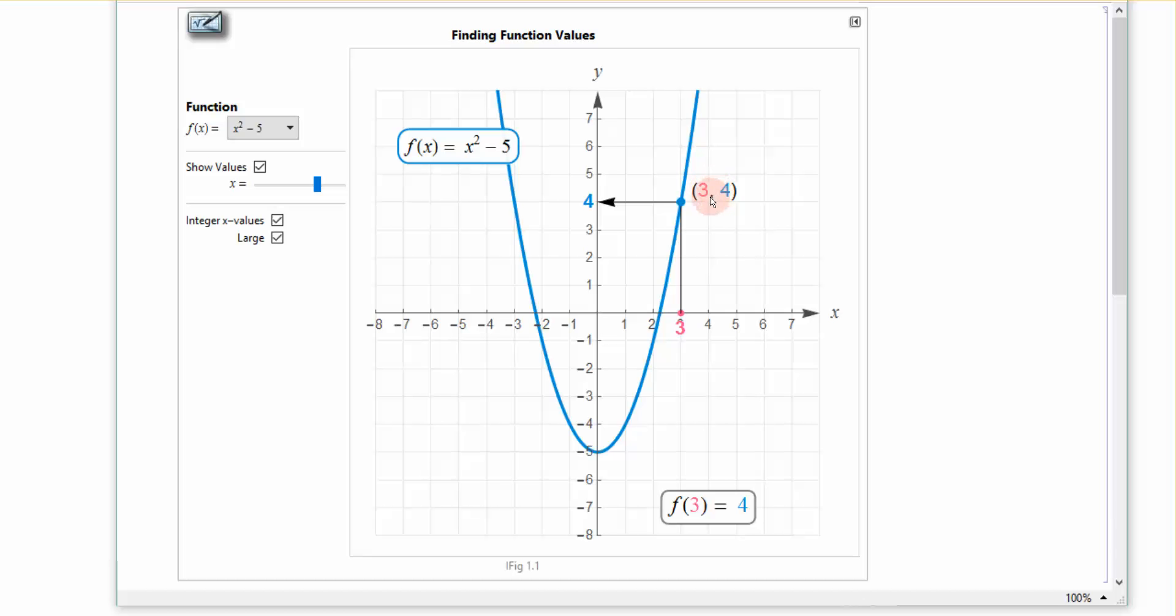So algebraically, I know that that's the case. But graphically, what's going on is when I put a number in for x, the y value I get out is the corresponding value of the ordered pair associated with those numbers on the graph.